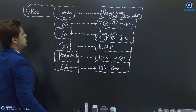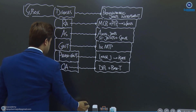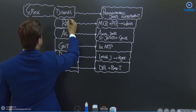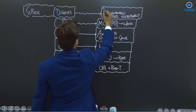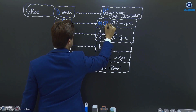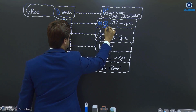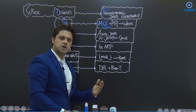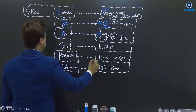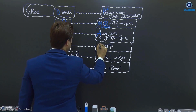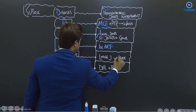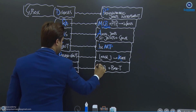So these are the pathognomonic joints for the exam — you must know them well. Let me revise once again: rheumatoid arthritis — MCPs (symmetrical involvement), and PIPs, not the DIPs. Ankylosing spondylitis — axial joint involvement. Gout — first MTP, first metatarsophalangeal joint. Pseudo-gout — knee joint. Osteoarthritis — DIPs.